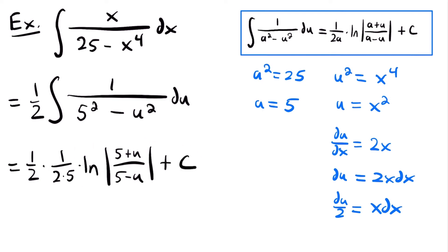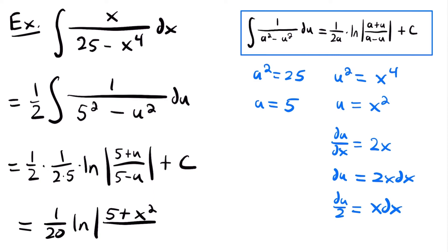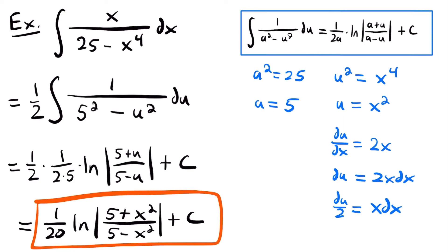And so if we simplify this and replace u with what it's equal to, which is x squared, we will have one half times 1 divided by 2 times 5. If we multiply all these numbers in the denominator, we'll have 2 times 2 which is 4, times 5 which is 20, so we'll have 1/20 times the natural log of the absolute value of (5 plus x squared) divided by (5 minus x squared), plus c. And so that will be the answer to this integral.